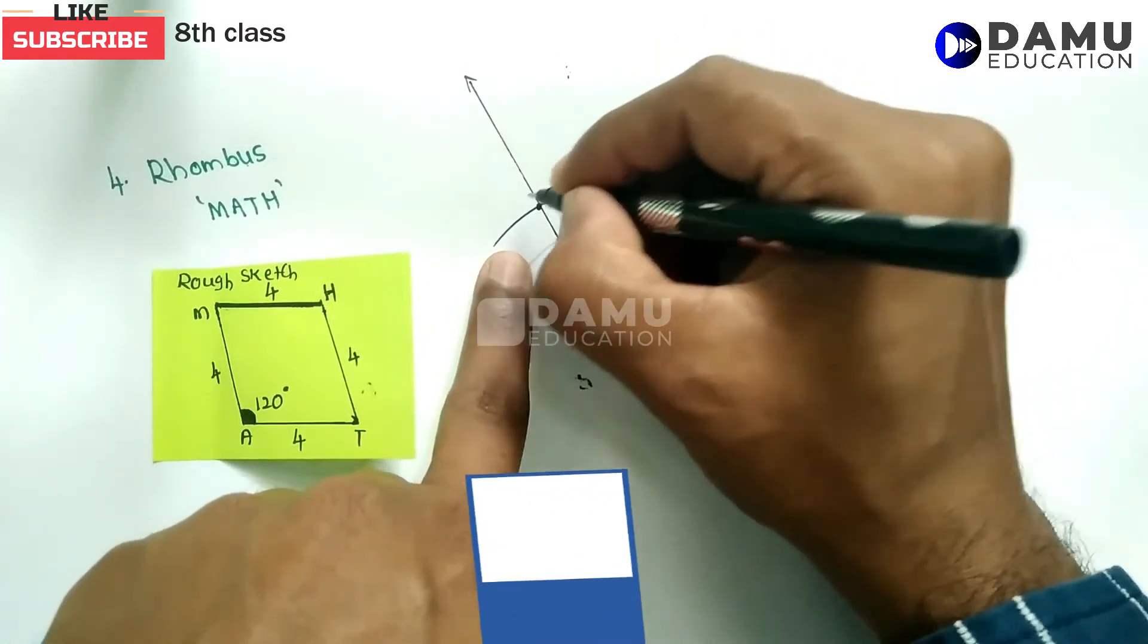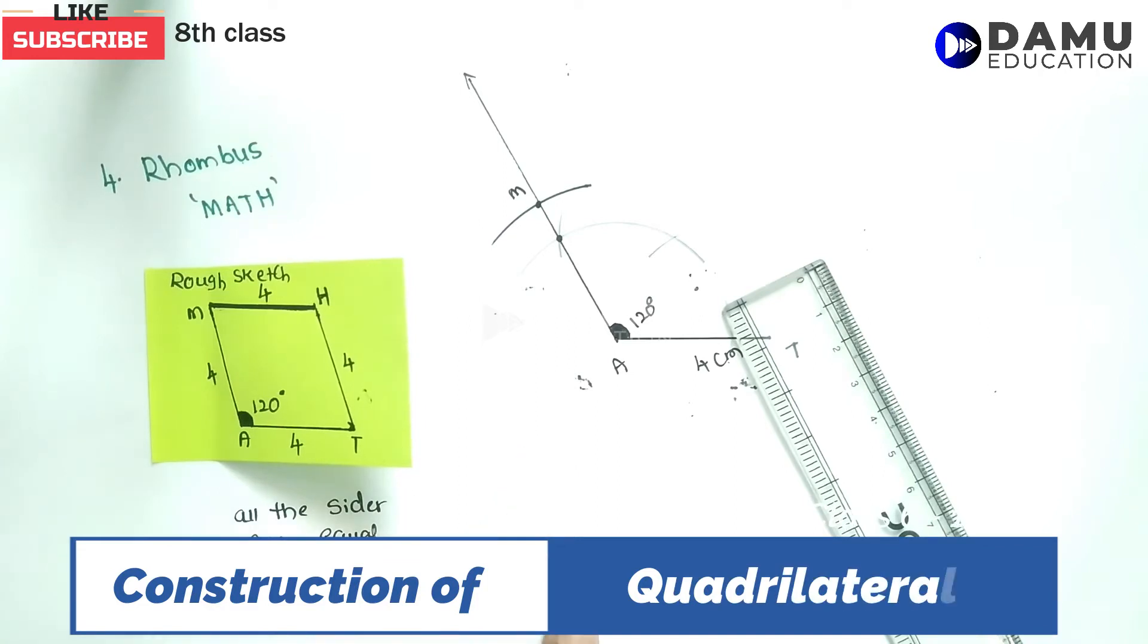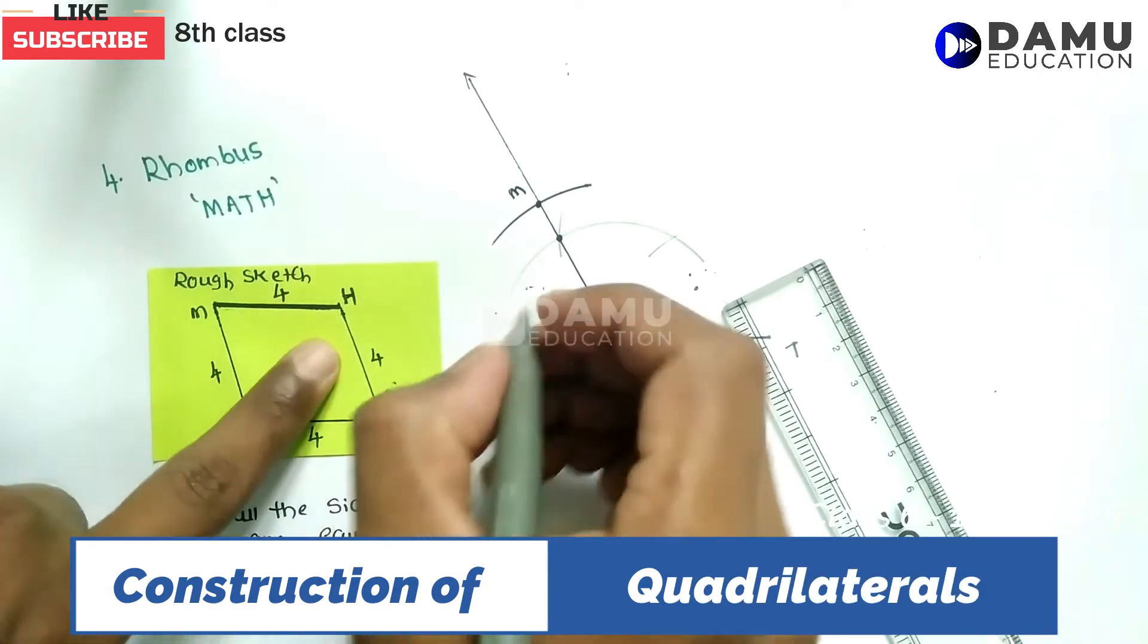This is the point where M is located. This length AM equals 4 cm.